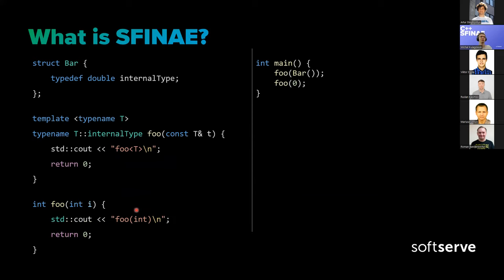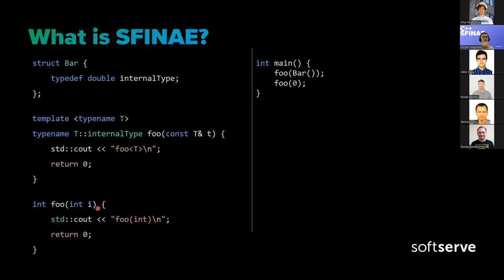To fix this, we can simply introduce an overload of foo that would return an int instead of some internal_type. Then it would work with no problem — foo(bar) calls the substituted template version, and foo(0) would fail substitution for the template, leaving only the plain int overload available. So only the template version is valid for bar and only the plain version is valid for int. It all works.